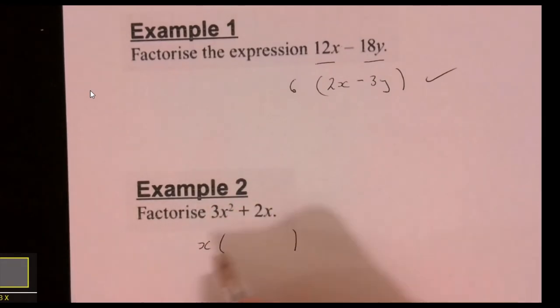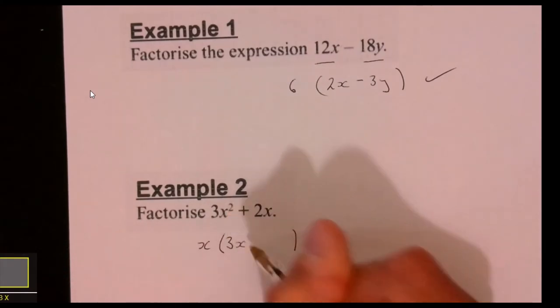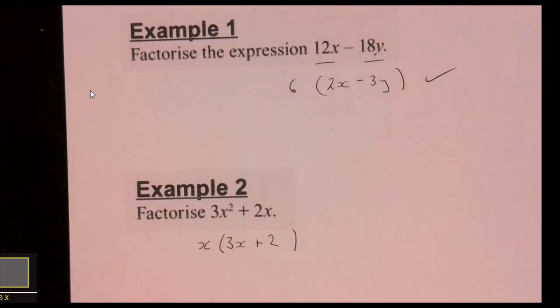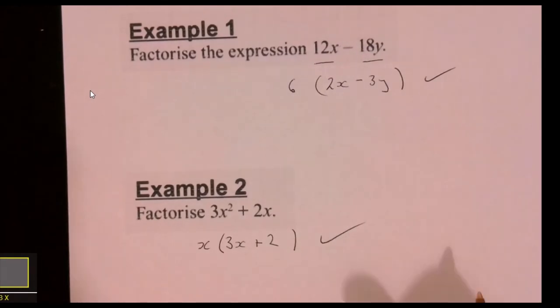Still got a 3, haven't touched that number. So x times x is x squared, so that goes there, and still got the 2. That x has gone outside. If I multiply out: 3x squared plus 2x. Brilliant, done.